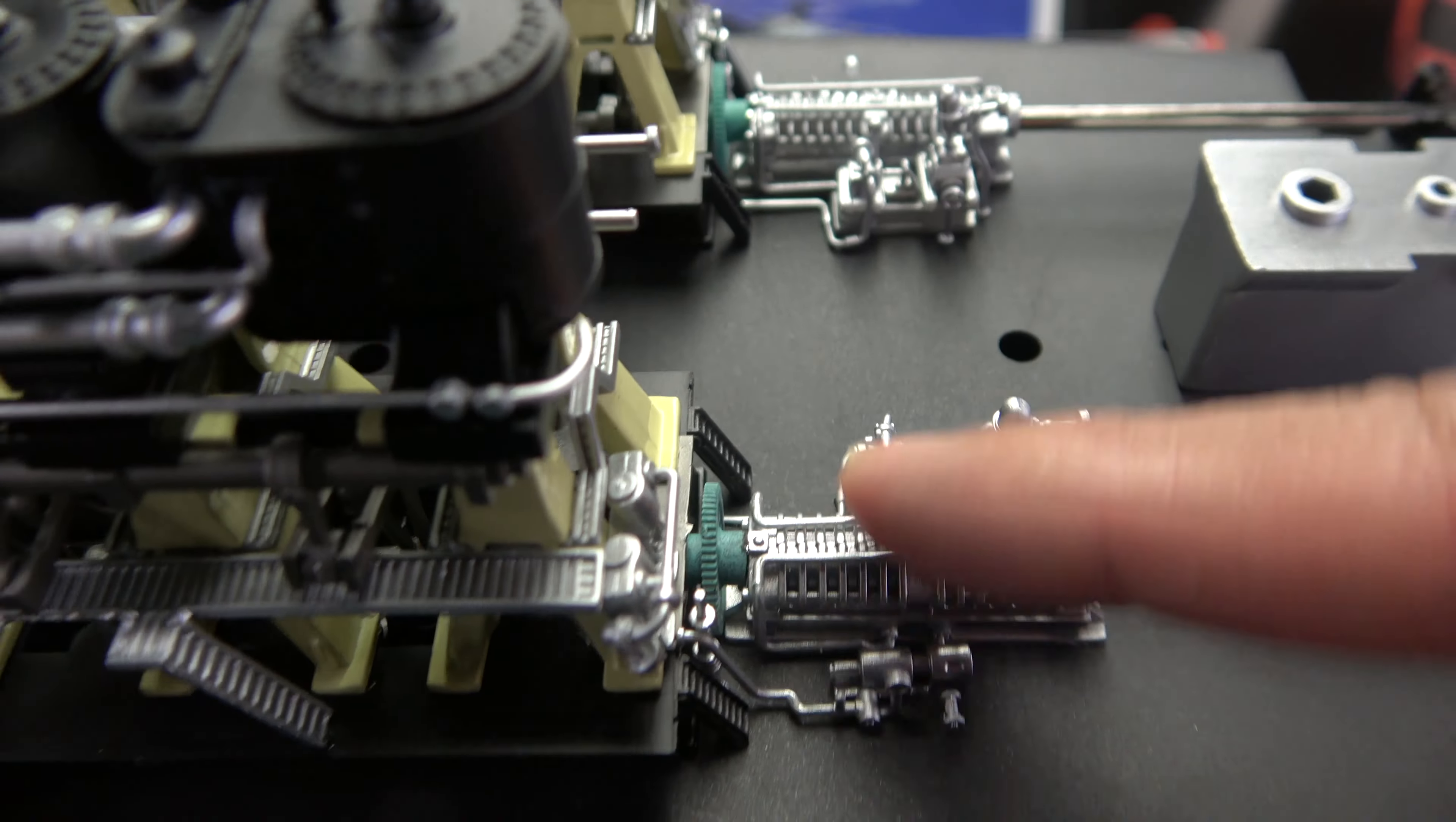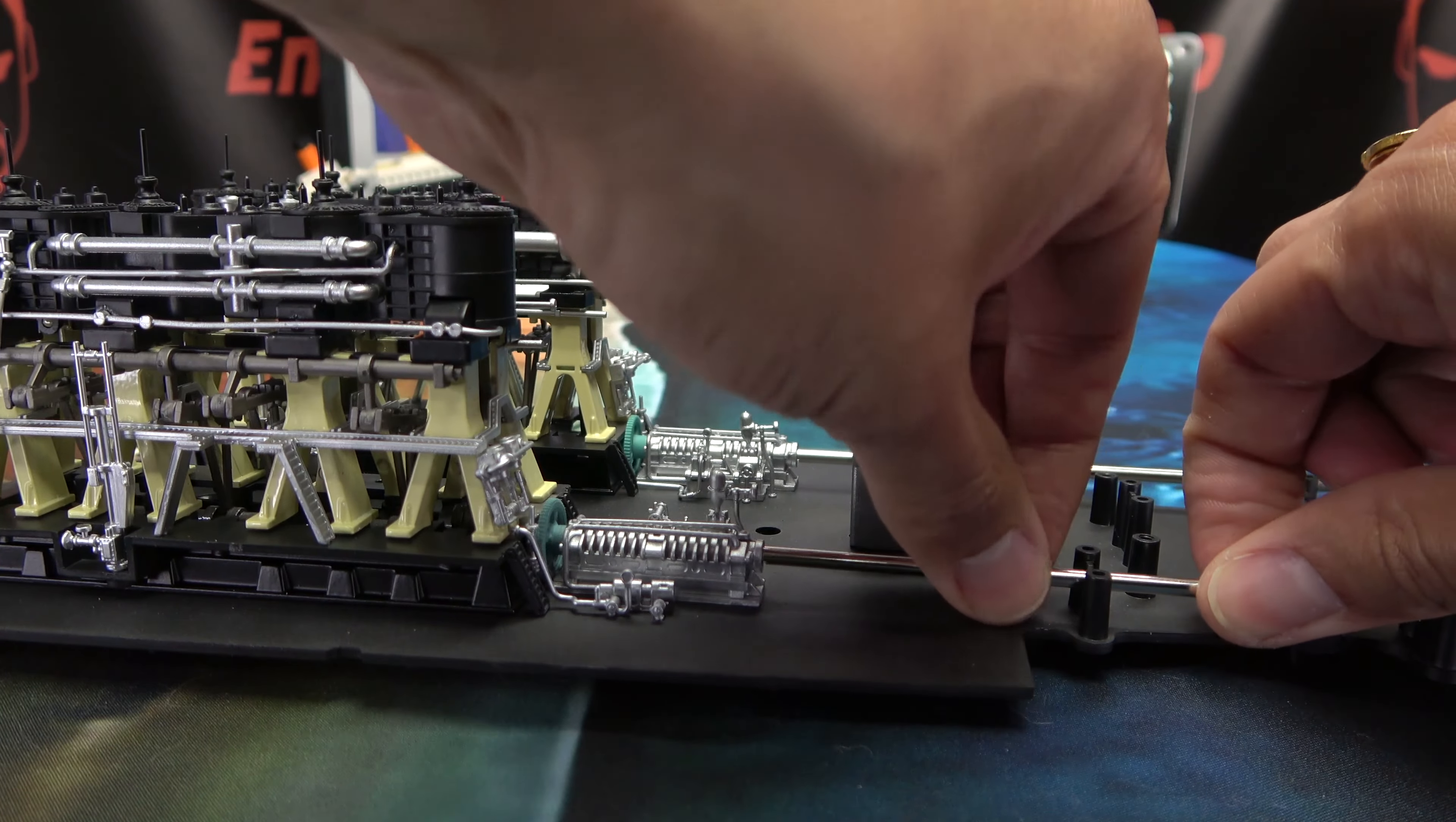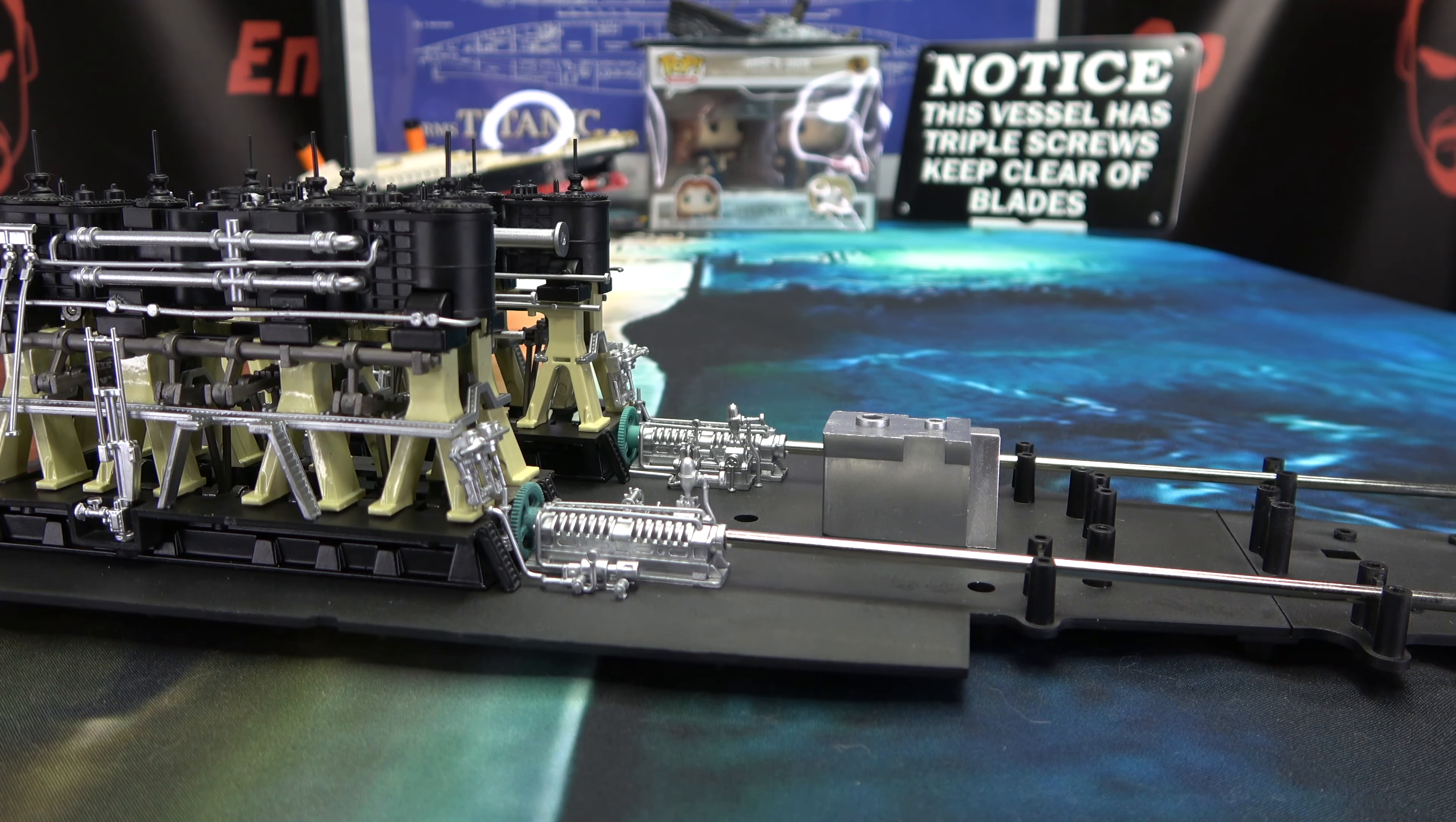I ended up just taking the whole engine off and shaving this part down, this part with the cog. And that did help. I can spin it and now it will move. It still seems like it's getting a little caught up somewhere. So I may have to do a little bit more shaving just to make sure everything works nice and smooth. But that's the process for getting that to work better.